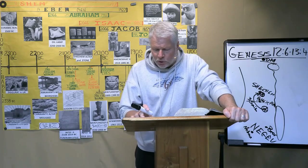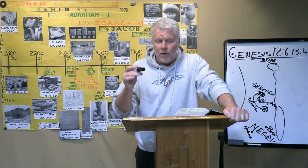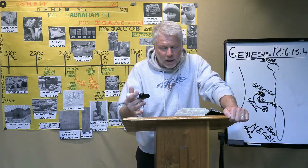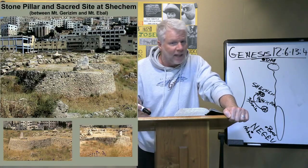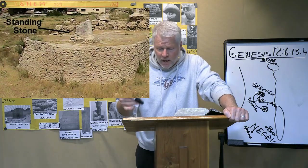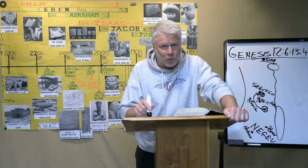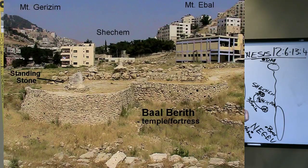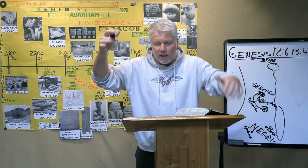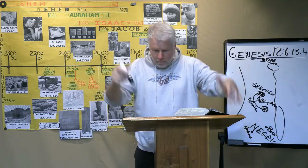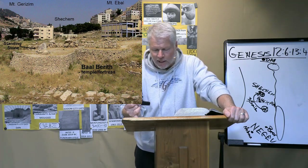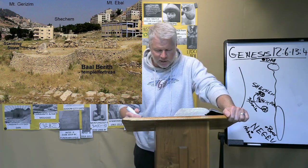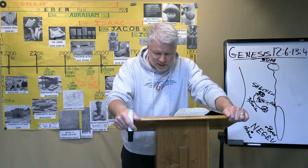This is where Abram comes to in Shechem when it mentions the Oak of Moreh. It is a holy site — a temple, a fortress with a standing stone. It's Mount Ebal and Mount Gerizim. This is where Joshua came after Moses told him to come here. So this place most likely had a holy tree — the tree of Moreh by Shechem. This is the area Abram comes to, passing through the valley between Mount Gerizim and Ebal.